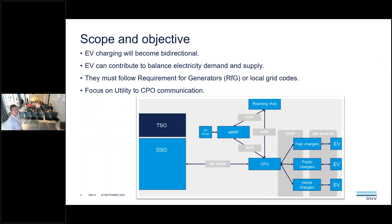The scope and objective has a background story: EV charging will become bidirectional, where an EV can contribute to balance electricity demand and supply, balance the grid, or balance the frequency. A cluster of EVs becomes a generator, which means they need to comply — at least here in the Netherlands — to the requirements for generators, which requires generators to stay within a certain bandwidth to keep the grid stable. This is also applicable to other countries where they have local grid rules.